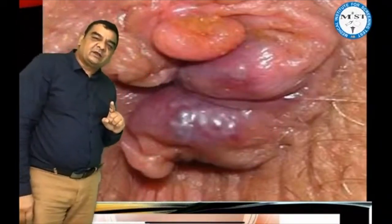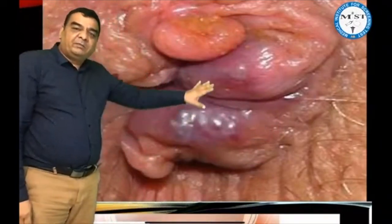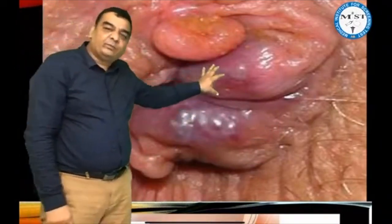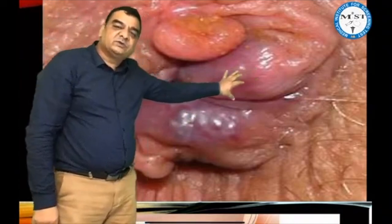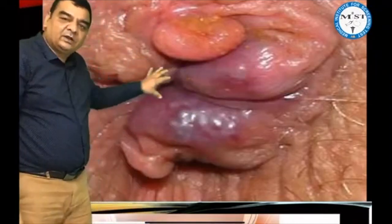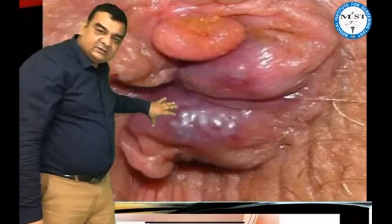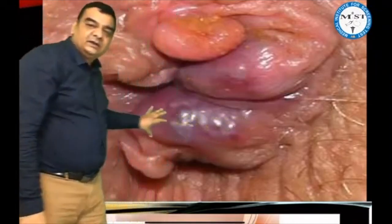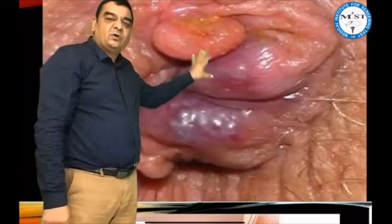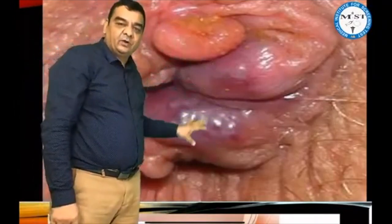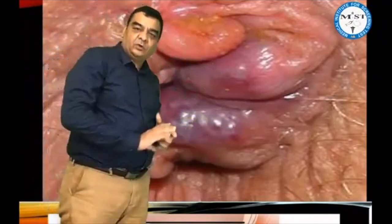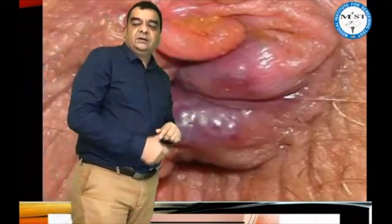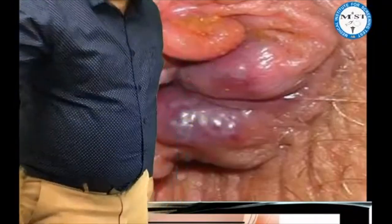It is not the rectum which is coming out, but you can see some blue cushions which are coming out. These blue cushions are actually the piles or the hemorrhoids.